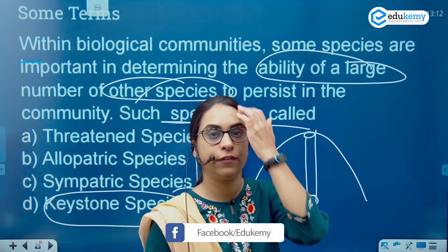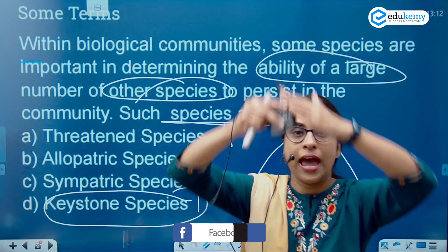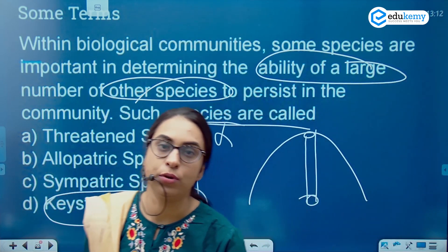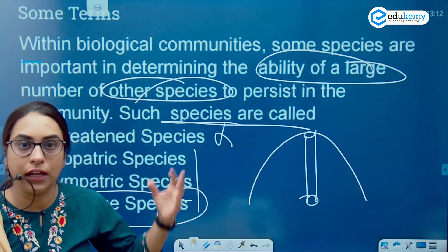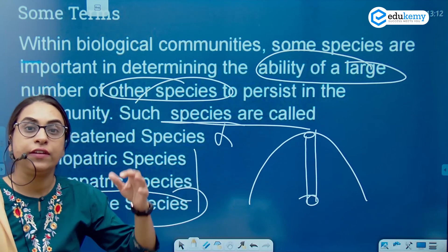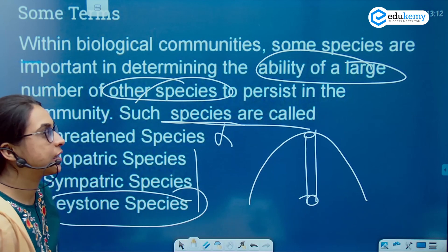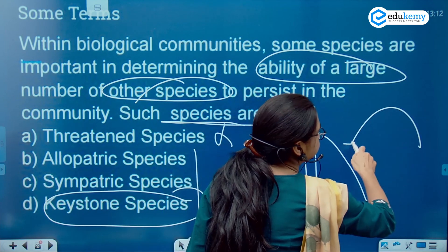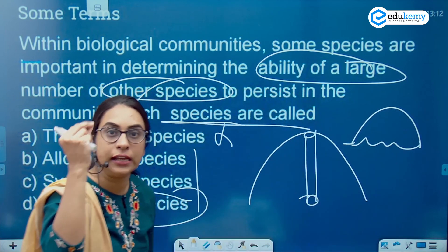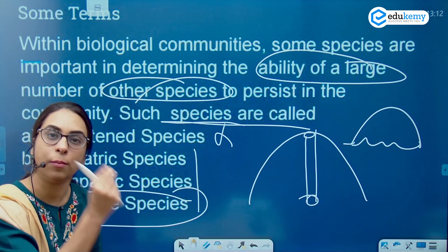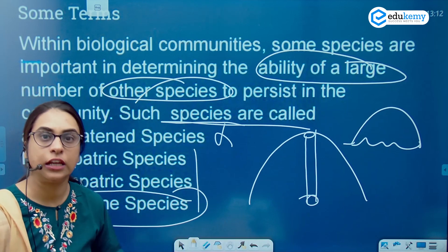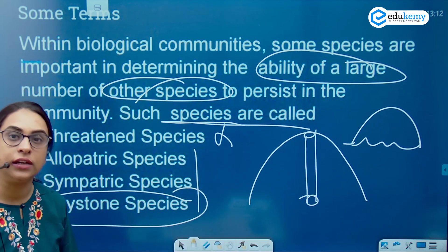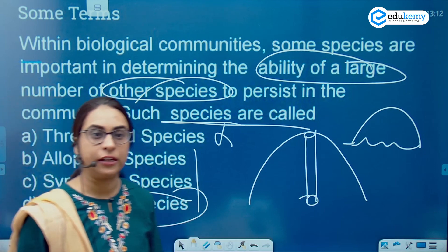For example, if you talk about the umbrella species — an umbrella species is also a species which affects a large number of other species, and it can live in a variety of habitats, as you can figure out from an umbrella. So try to link the common meaning you hear in everyday life to the environment terms, and you will learn them in a better manner.